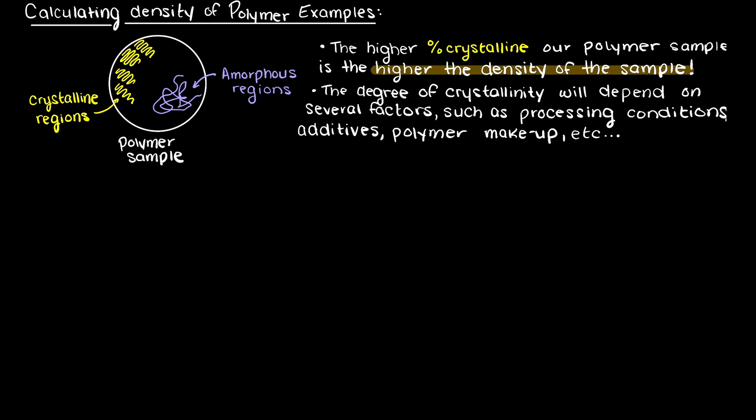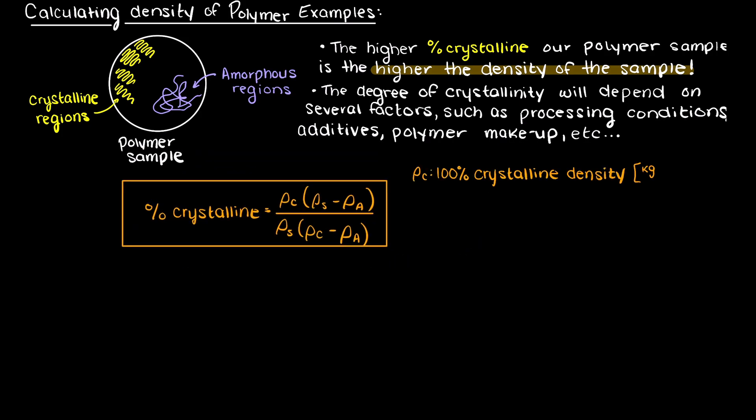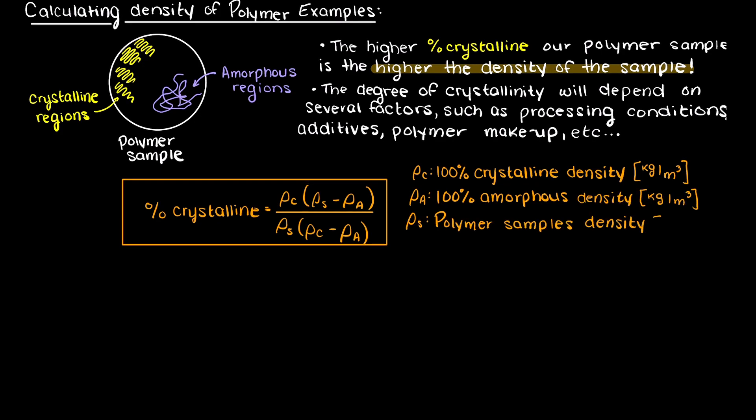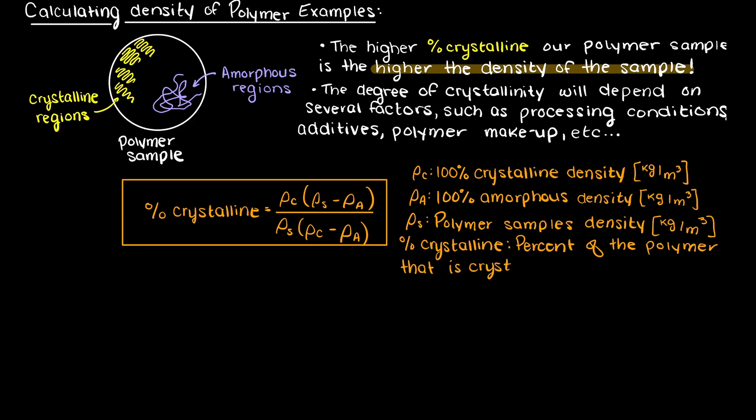So the equation that we introduced in the previous video for determining the percentage of crystallinity in a polymer sample can actually be used to help us find the density of a polymer if a few variables are known. The equation states that the percentage crystallinity is equal to ρc(ρs - ρa) divided by ρs(ρc - ρa), where ρc is 100% crystalline density, ρa is 100% amorphous density, and ρs is the sample's real density.